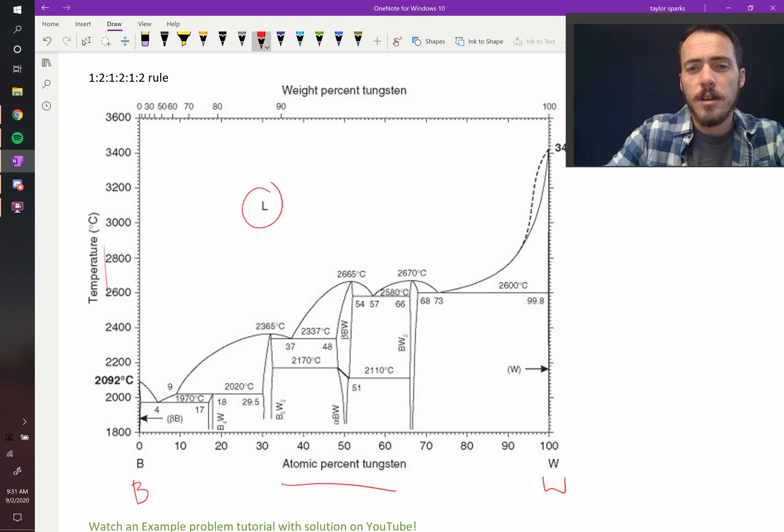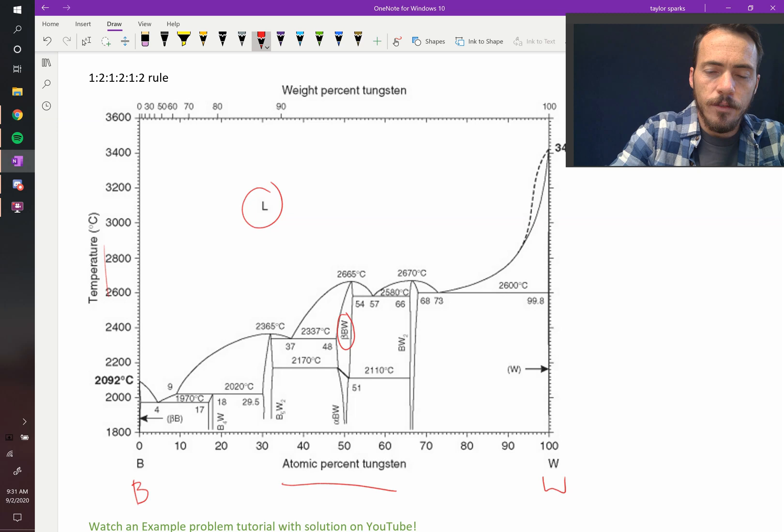Now when you label these things, they've drawn in some labels like this one. They've called this beta-boron tungstate, and then they've got this one, BW2, but it's actually referring to this little region here in the middle. Then they draw a little arrow saying that this wall over here at 100%, that's pure tungsten.